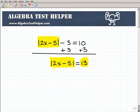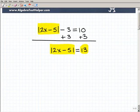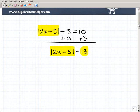So here we have the absolute value 2x minus 5 equals 13. Now, here's the key step when you're solving any absolute value equation.